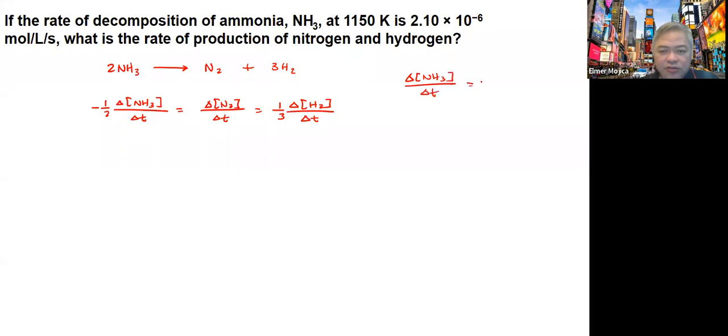We're given here that delta NH3 over t equals 2.1 times 10 to the negative 6. So what we're going to do is we're going to get what is this.